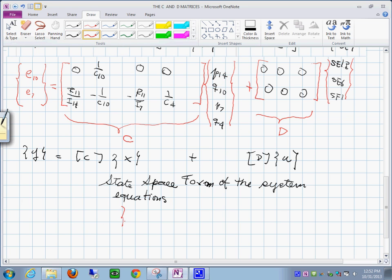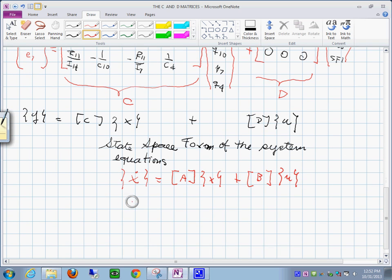State space form is always X dot equals A times X plus B times input vector U. And to complete, Y equals C times X plus D times U. In fact, in Simulink you are going to see a block that has exactly this format. In that block is contained the entire system. So this form that you see here is called State Space Form.